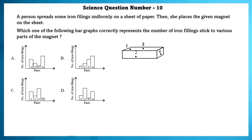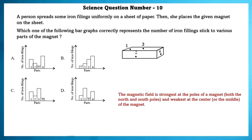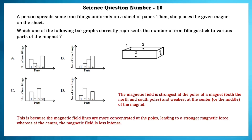Science question 10. A person spreads iron filings uniformly on a sheet of paper and places a magnet on it. Which option correctly represents the number of iron filings stuck to various parts of the magnet? The magnetic field is stronger at the poles — both north and south — and weakest at the center. This is because magnetic field lines are more concentrated at the poles, leading to stronger magnetic force, whereas at the center the field is less intense. So option A is the correct graph.